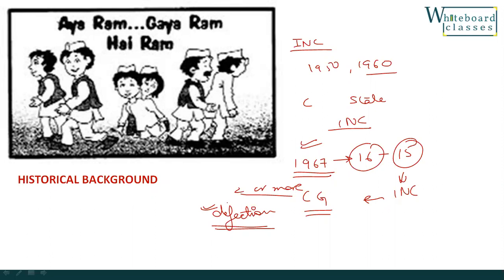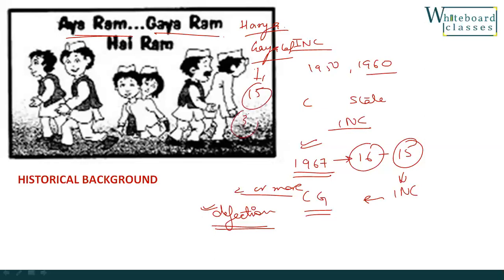India became an imbalanced democracy. A major term also coined — 'Aya Ram, Gaya Ram.' The story behind this: in the Haryana Legislature, there was an MLA named Gaya Lal, who changed his party three times for selfish motives. That's why defectors were called 'Aya Ram, Gaya Ram.'